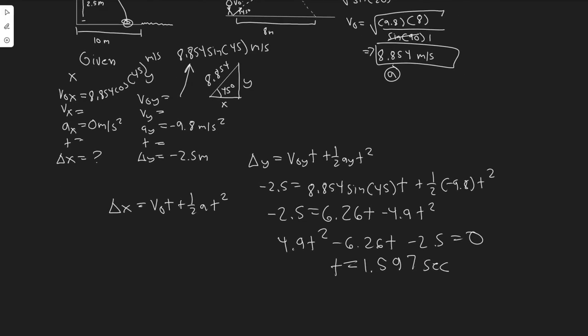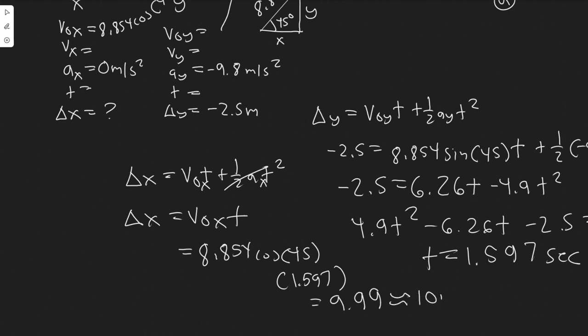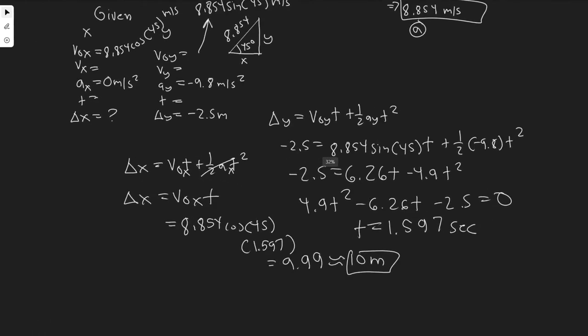We know the time it's going to take to reach the ground is 1.597 seconds. Now that we have that, we can plug it in here. As I said before, ax is 0, so Δx equals V₀x times t. We're going to calculate how far the person will travel in the x. Initial velocity in the x is 8.854 cos of 45 times the time 1.597. Go ahead and do this. You will find it equals 9.99, so basically 10 meters. So 10 meters is how much they're going to travel in the x direction.